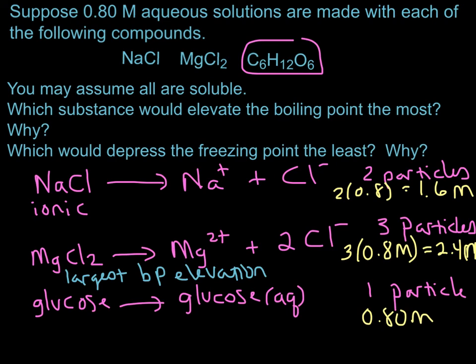What about the freezing point depression? The higher the concentration of particles in solution, the more the freezing point is depressed. Now, we're asked for which one would depress the freezing point the least. And so in that case, it would be glucose, since it's still 0.80 molar in particles. So glucose would have the smallest effect on the freezing point. So the smallest freezing point depression.